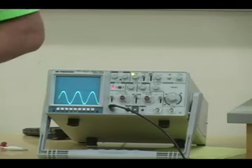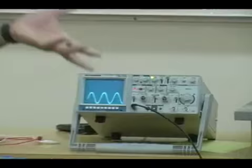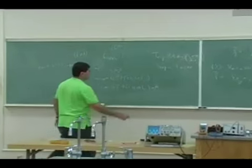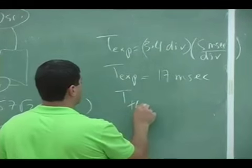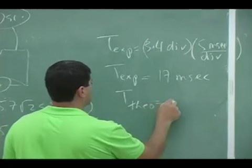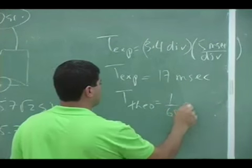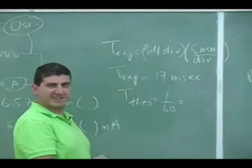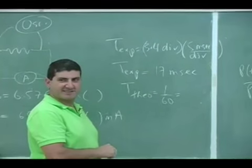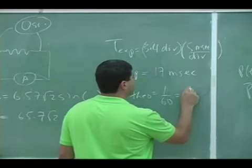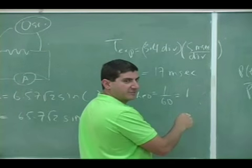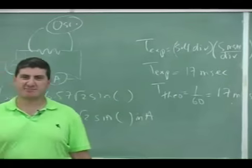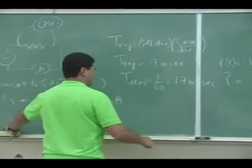Well, T expected is 1 over F, and I'm saying F for a typical outlet is 60 cycles. So T theoretical is 1 over 60, which is 0.16 something, something. So that is rounded up. It is 17 milliseconds, right? I want to round it up just to make it look even better, okay?